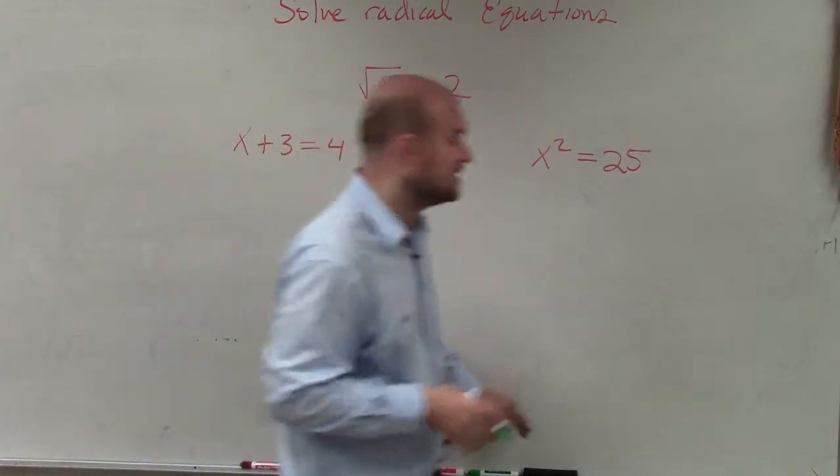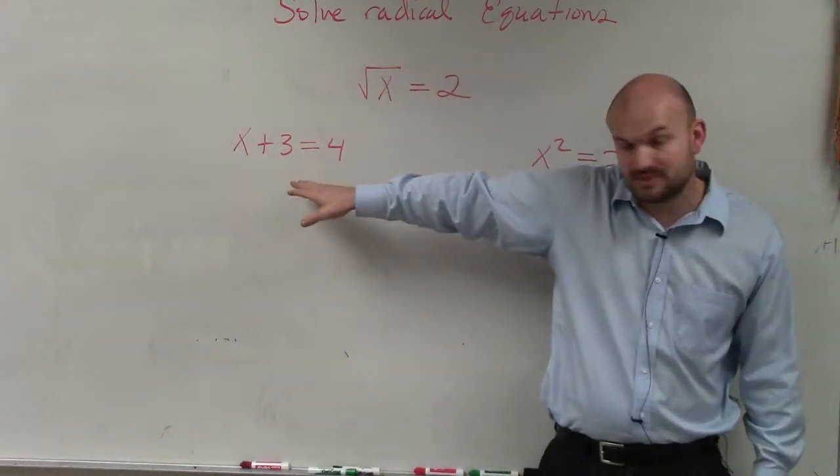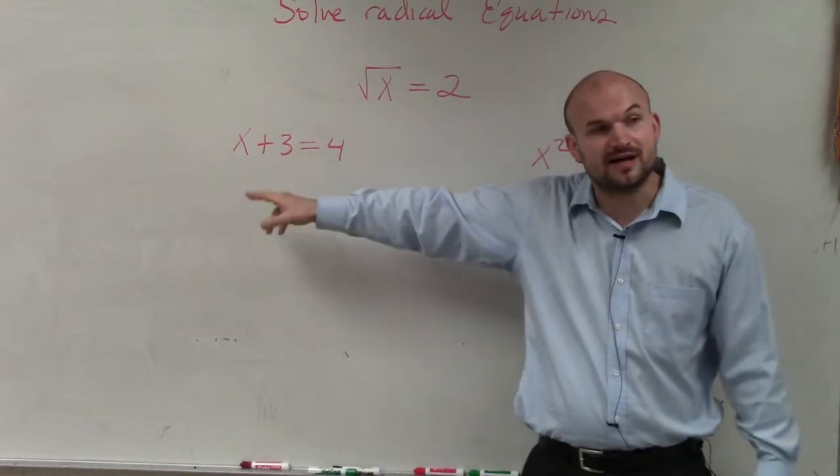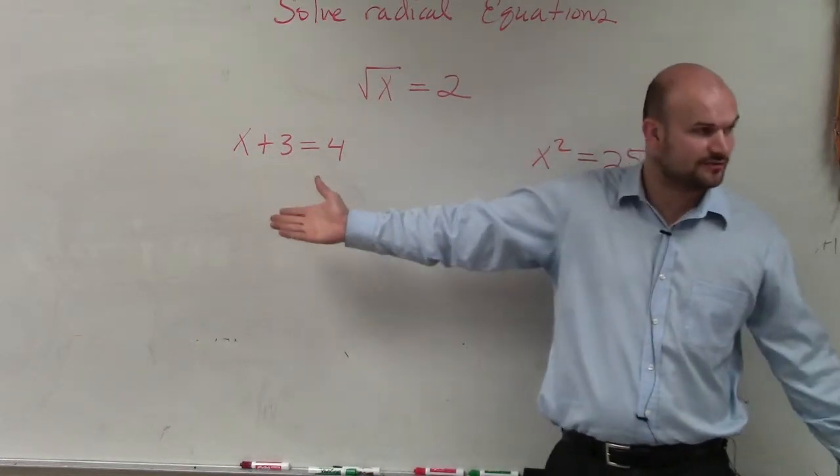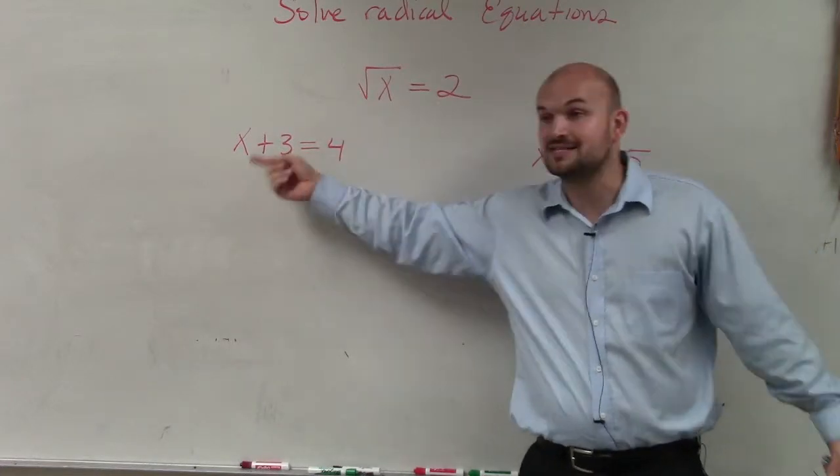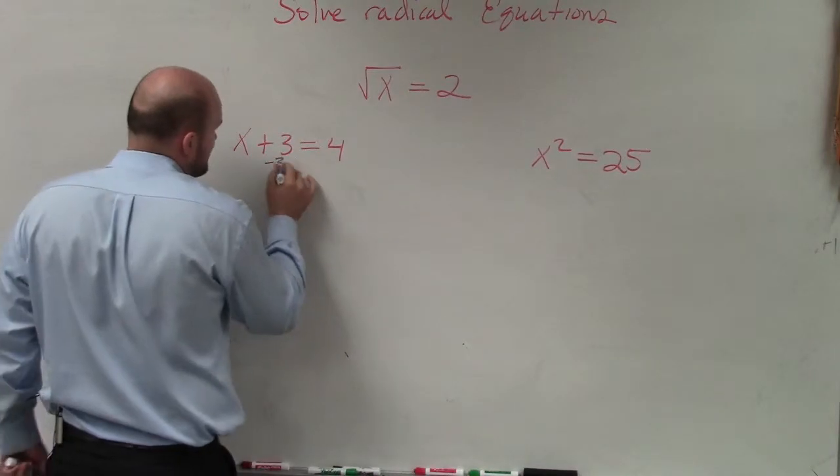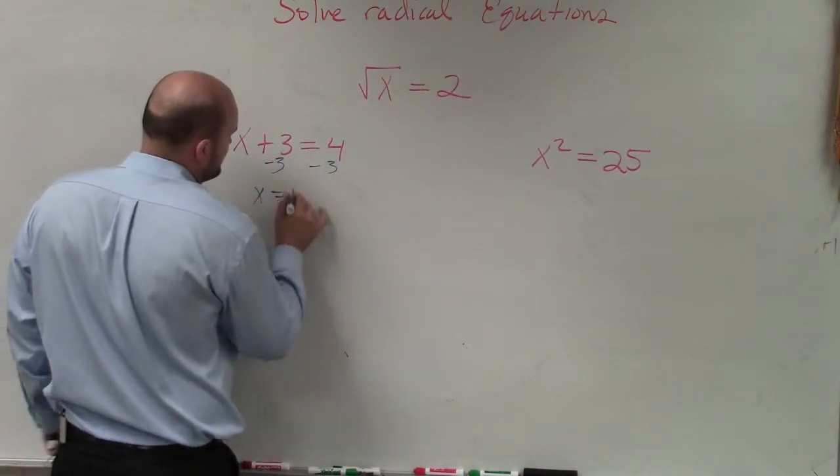Now, at the beginning of the year, Mariana, when we were going over problems like this, if we were going to solve for the value of x, we can see x plus 3 is equal to 4. So obviously, to look at your inverse operations, what we see is x is being added by 3. So to undo adding by 3, we subtract 3. So x equals 1.